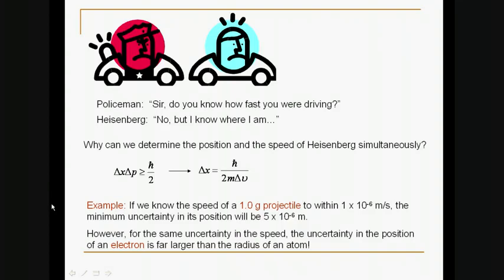And here is an example. If we know the speed of a 1.0 g projectile to within 1 times 10 to the minus 6 m/s, the minimum uncertainty in its position will be 5 times 10 to the minus 26 m. So even for a 1 gram projectile, this uncertainty is negligible. However, for the same uncertainty in the speed, that is this 10 to the minus 6 meters per second, the uncertainty in the position of an electron is far larger than the radius of an atom.